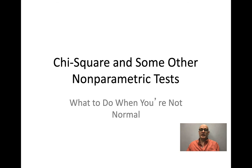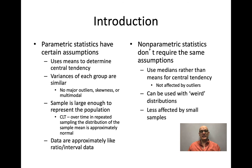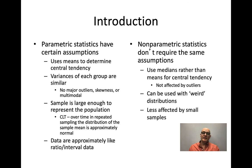Parametric statistics have certain assumptions. They use means to determine central tendency. Interval ratio data allows you to calculate means, but ordinal and nominal data do not. Parametric tests assume no major outliers, not a lot of skewness, the data is not multimodal, and that the variances of both groups are similar. There are some adjustments for differing variances, but parametric statistics generally assume that dispersion around the mean is more or less the same.